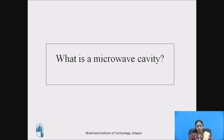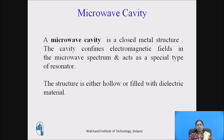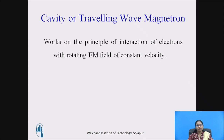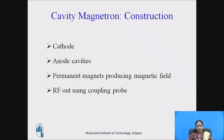What is a microwave cavity? A microwave cavity is a closed metal structure. The cavity confines electromagnetic fields in the microwave spectrum and acts as a special type of resonator. The structure is either hollow or filled with dielectric material. The cavity or travelling wave magnetron works on the principle of interaction of electrons with a rotating electromagnetic field of constant velocity. We will now see the cavity magnetron's construction and working in detail.